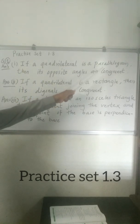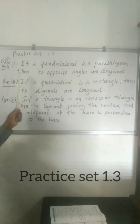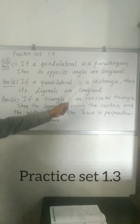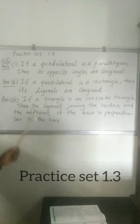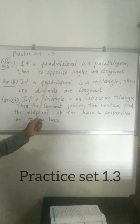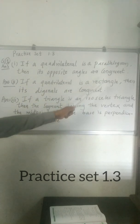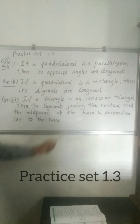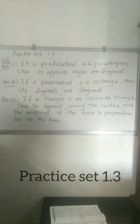Here, 'if the quadrilateral is a parallelogram' is the antecedent and 'its opposite angles are congruent' is the consequent. For the rectangle: 'if the quadrilateral is a rectangle' is the antecedent and 'its diagonals are congruent' is the consequent.